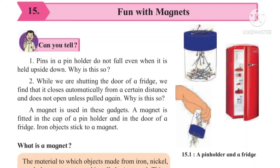A magnet is fitted inside the cap of the pin holder — in the blue color cap, a magnet is fitted inside. Similarly, in the door of the fridge, a magnet is also fitted. As we know, magnets attract iron objects, and pins are made of iron. So when we keep the pin holder upside down, the cap attracts all the pins because of the magnet. For the fridge door too, the magnet fitted in it attracts the iron parts in the door, so it closes towards itself.